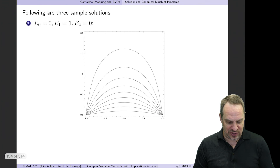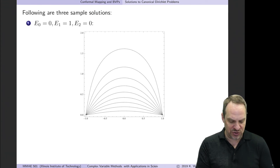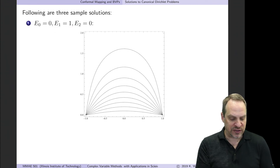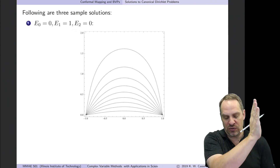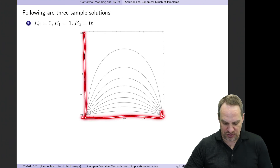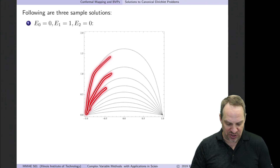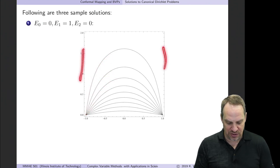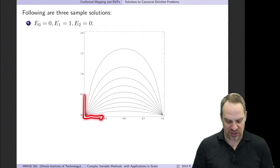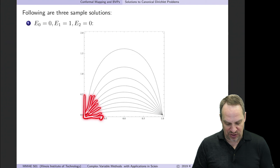Let's plot some different sample solutions with different values of E0, E1, and E2. First: E0 = 0 on the left side, E1 = 1 along the bottom real axis, and E2 = 0 on the right side. Plotting lines of constant electrostatic equipotential starting from 0.1, 0.2, 0.3, 0.4, up to 1 along the boundary — you'll notice how the contours pile up in the corners because there's a dramatic change from 0 to 1 in the electrostatic potential at those corners.